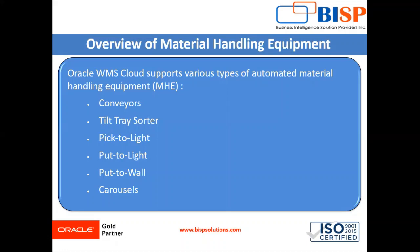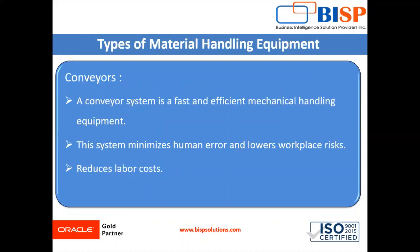A conveyor system is a fast, efficient mechanical handling equipment for automatically transporting loads and materials within an area. This system minimizes human error, lowers workspace risk, and also reduces labor cost.